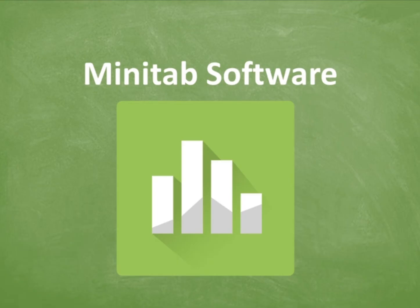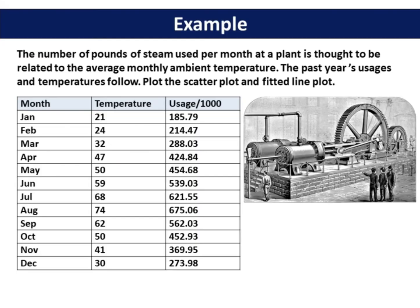Let's take a look at an example using Minitab. The number of pounds of steam used per month at a plant is thought to be related to the average monthly ambient temperature. The past year's usages and temperatures are as follows. Plot the Scatter Plot and Fitted Line Plot.